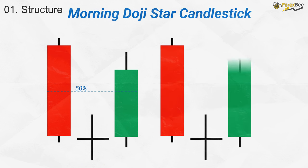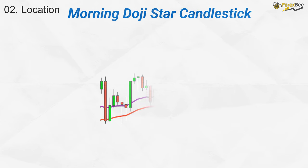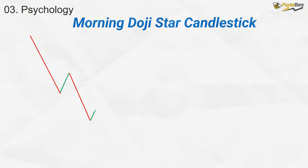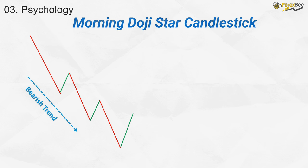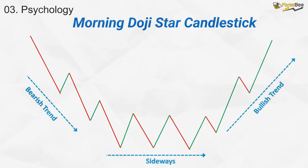If the closing price of the third bullish candle is above the high of the first bearish candle, the chances of a successful bullish reversal increase even further, indicating that buyers have surpassed the previous resistance level. A morning doji star performs well when it forms within an existing trend. When it forms at a moving average support during a bullish trend, it strengthens the case for the trend to continue. The psychology is rooted in market indecision followed by a shift in momentum — the doji signals hesitation, and the final bullish candle indicates that buyers have regained control.